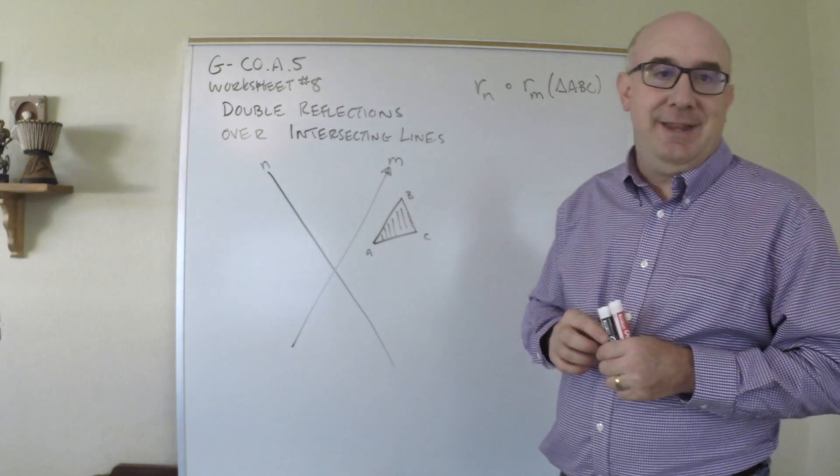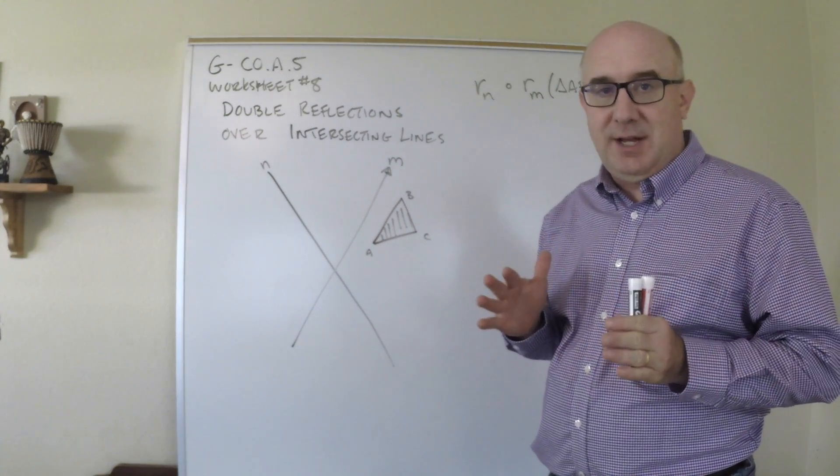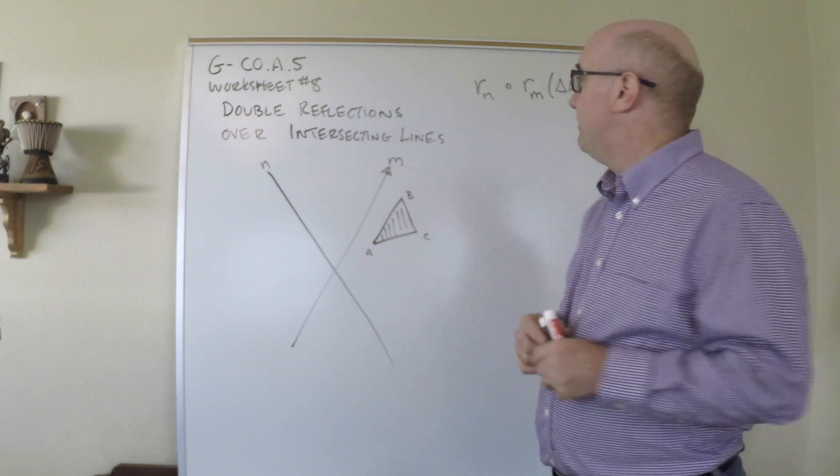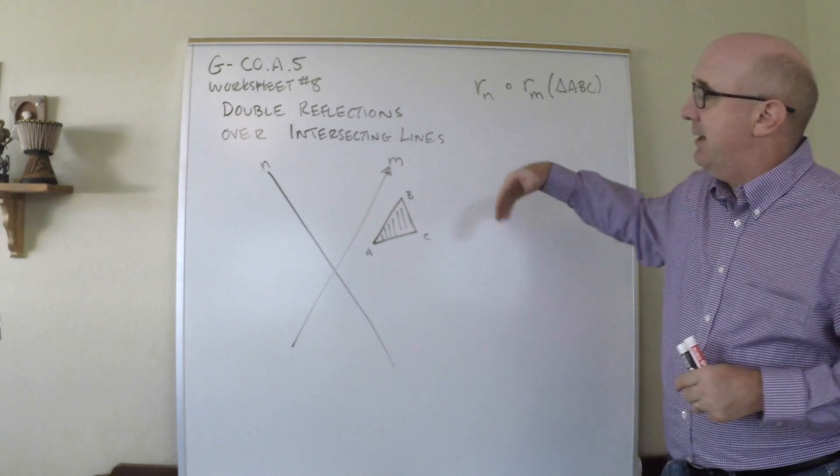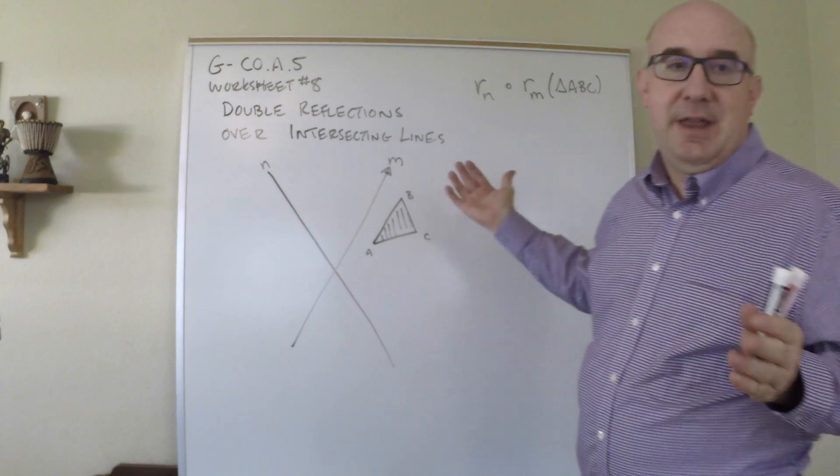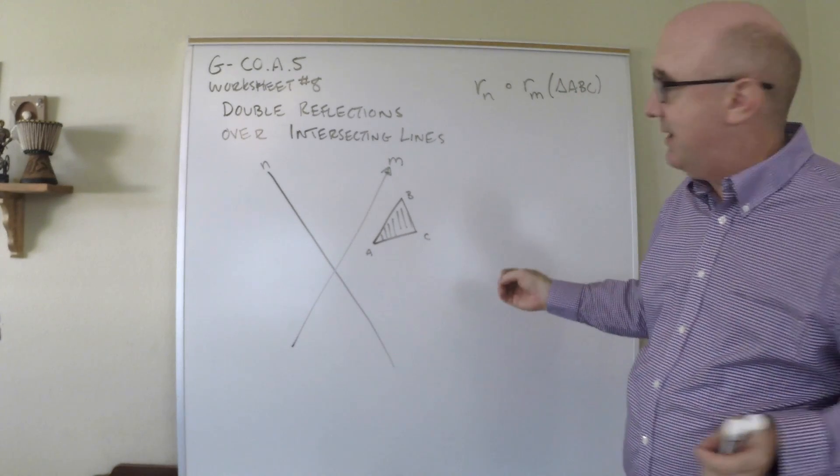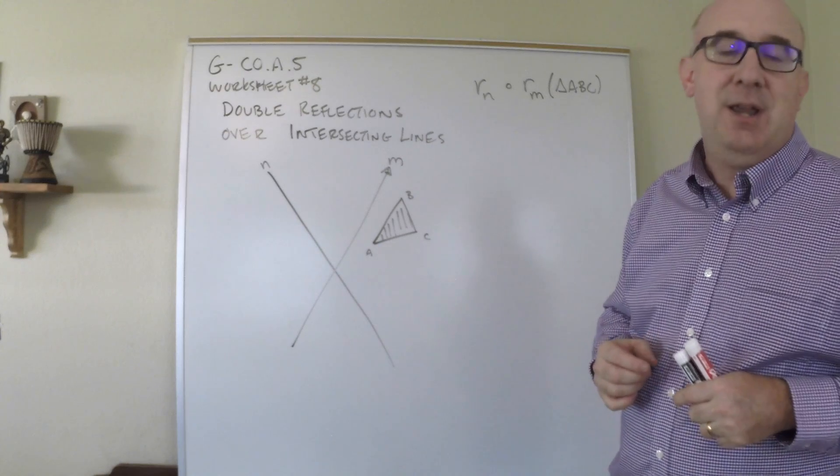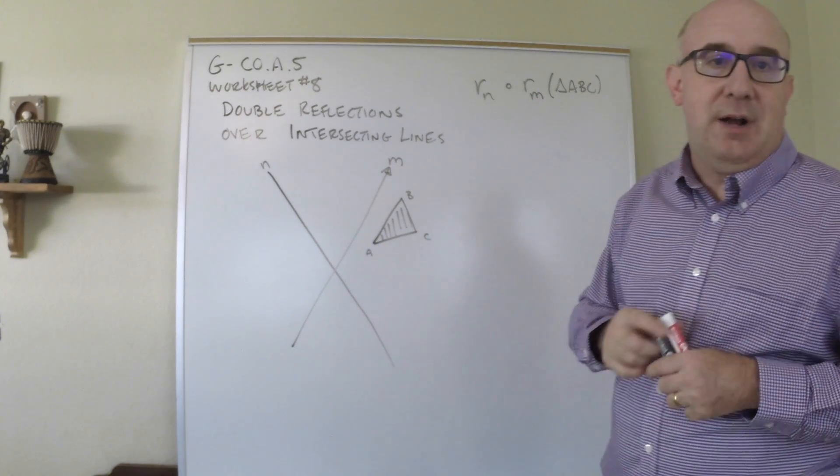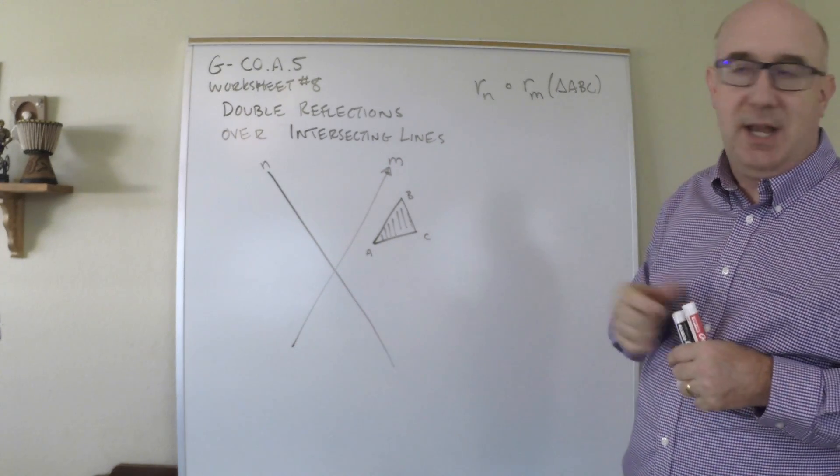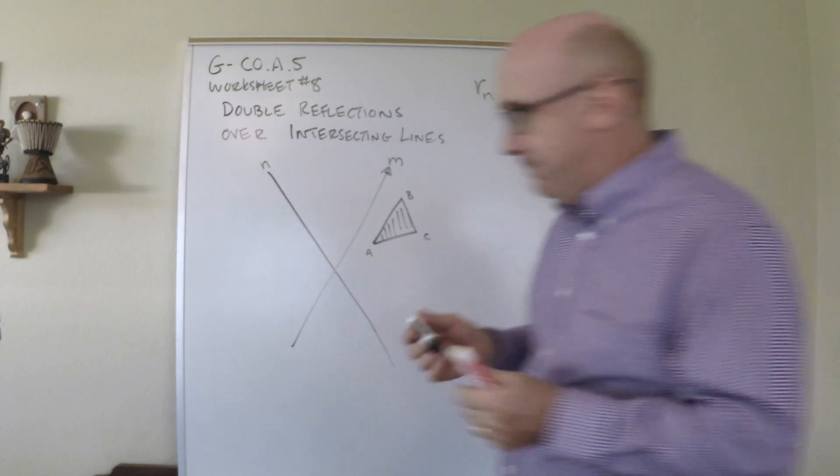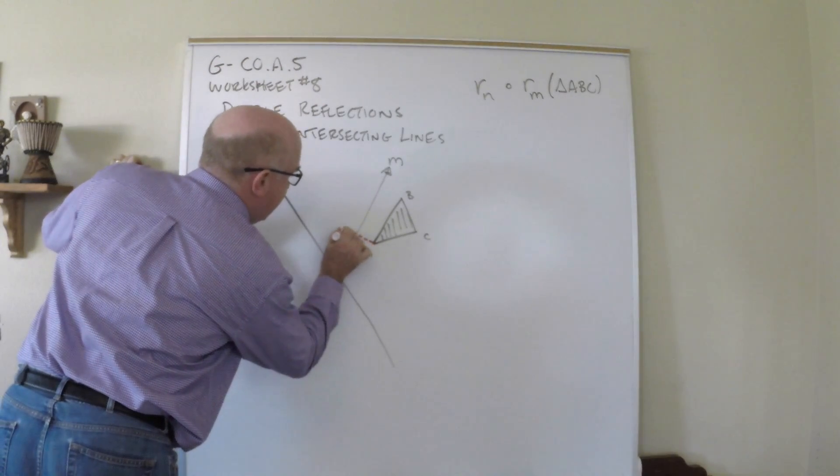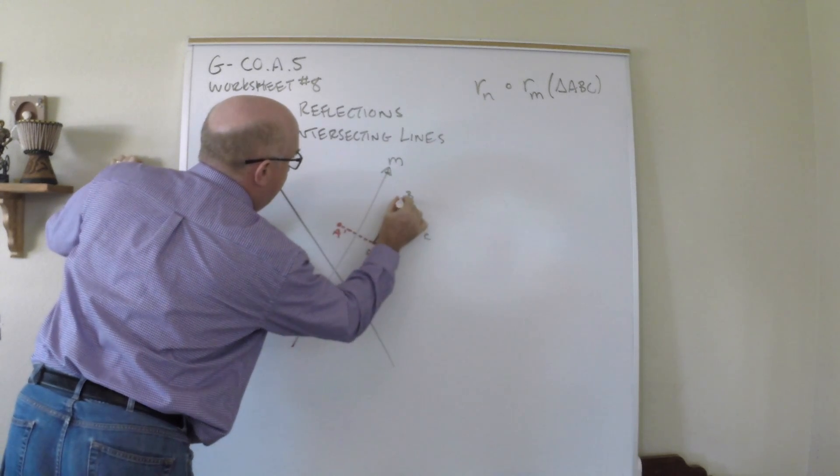Here we're going to find that the intersection of the two lines will definitely change the resultant transformation. So again the location of the triangle or the point does not matter as to which direction it goes. The direction is determined by the order of things here. First this says reflect over M. So I'm going to do my best here to reflect this.